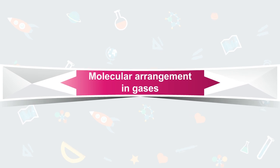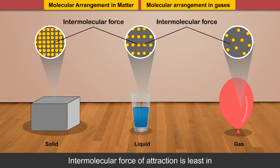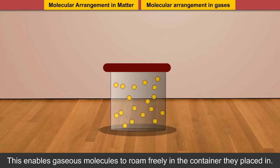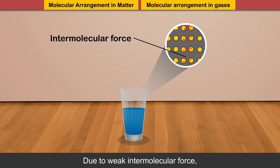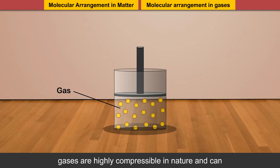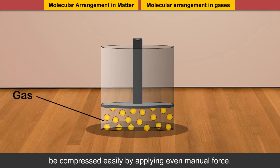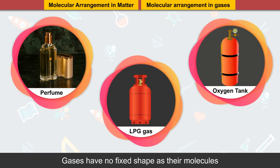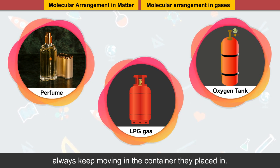In gases, molecules are located far apart from each other. Intermolecular force of attraction is least in gases in comparison to the rest of the states of matter. This enables gaseous molecules to roam freely in the container they are placed in. Due to weak intermolecular force, gases are highly compressible in nature and can be compressed easily by applying even manual force. Gases have no fixed shape as their molecules always keep moving in the container they are placed in.